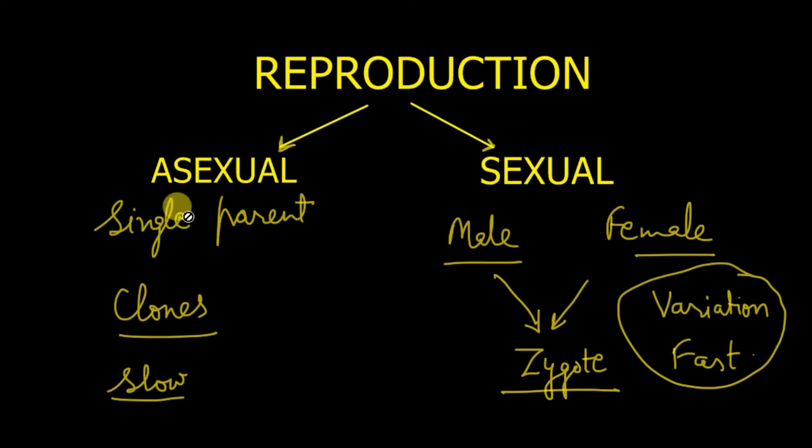Reproduction is of two types: sexual and asexual. In asexual, there is a single parent involved. Clones or identical individuals are produced, and variations are very slow. Only chance factors, if there are any errors, will cause variations. In sexual reproduction, there are two individuals, male and female. They undergo crossing over and produce gametes. When they fuse, they form a zygote, and variations are faster.